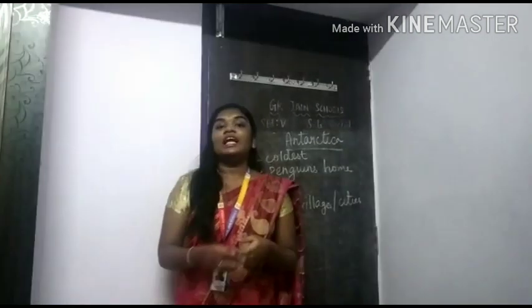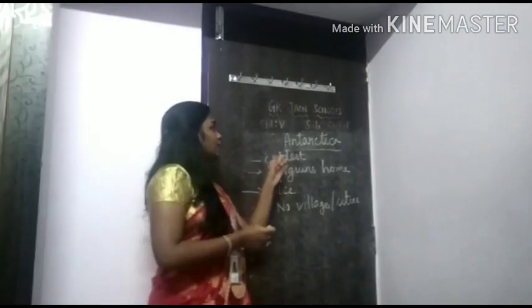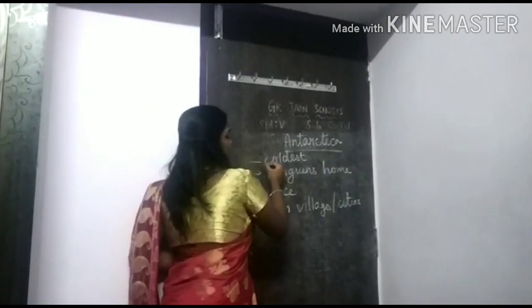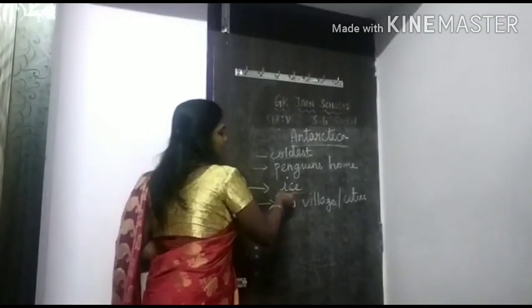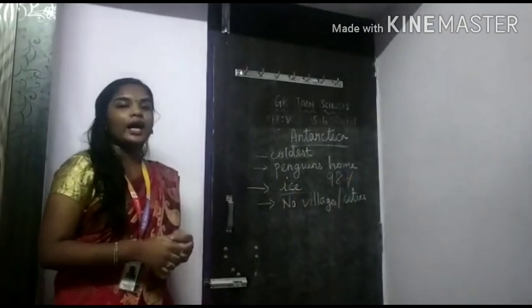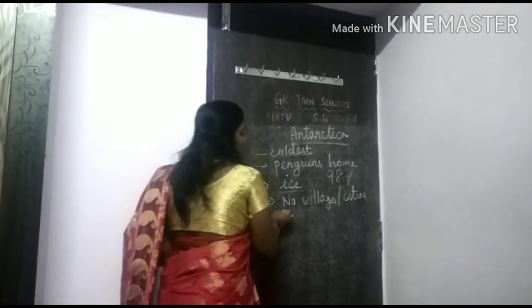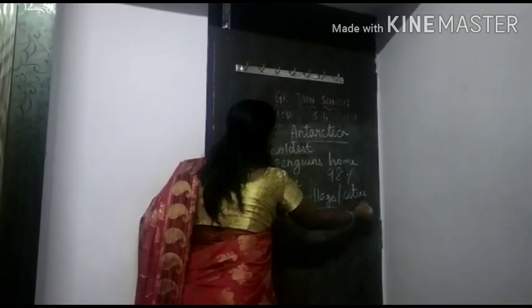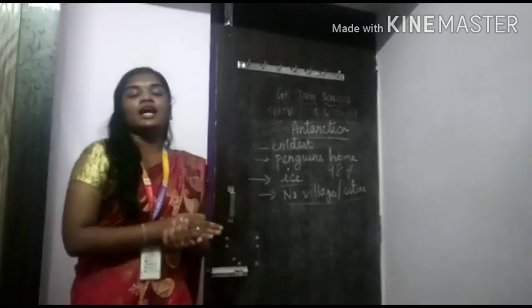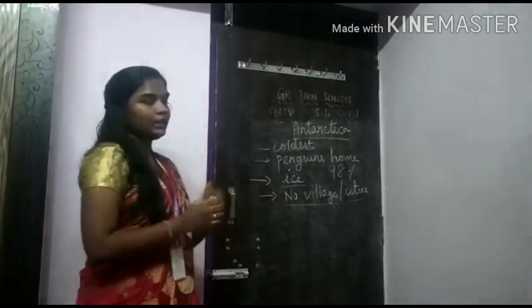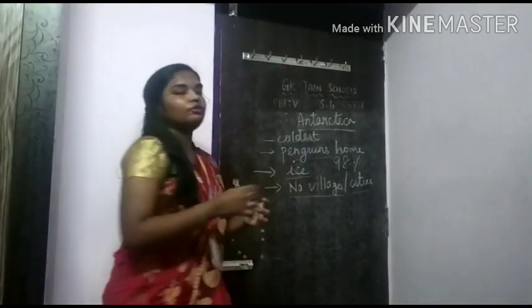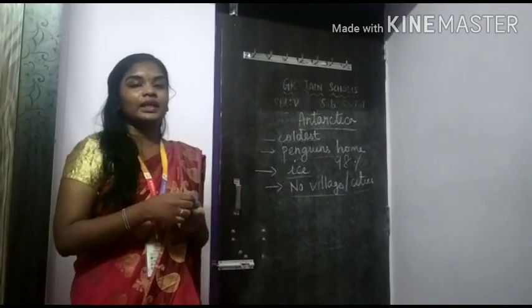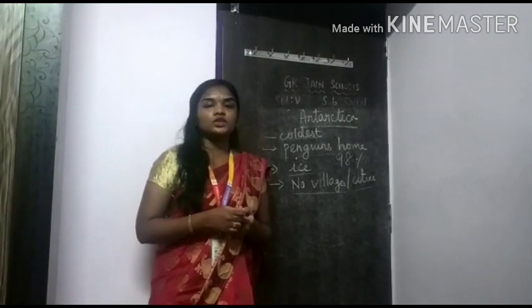The last continent is Antarctica. Antarctica is the coldest continent because it is covered by ice — 98% of Antarctica is covered with ice. There are no villages or cities because life is not possible in Antarctica. Most penguins live in this continent, that is why Antarctica is called the penguin's home.